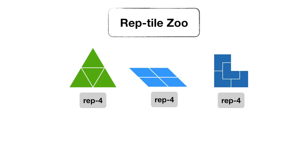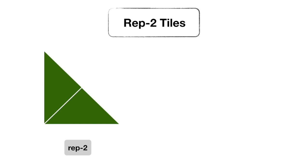Aren't there any rep-2 tiles? Rep-3 tiles, or more? There are only two rep-2 tiles. The right isosceles triangle. And a rectangle, or any parallelogram, with these dimensions.